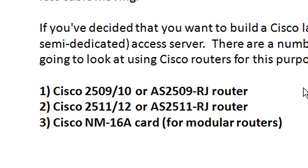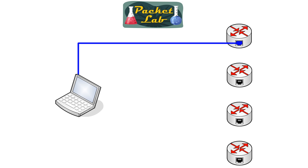Let's first take a look at a couple of slides to illustrate the advantage of having a dedicated access server — some people call it a terminal access server or terminal server; I'll just use access server going forward. Here we have a simple Cisco lab with four devices — looks like routers — you've got your laptop, your terminal emulator fired up, connected via your COM port, and the blue Cisco rollover cable connected to the console port of R1. You do your configuration and then want to move on to R2.